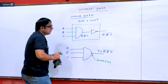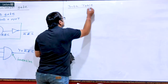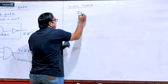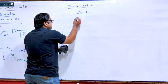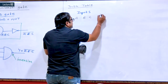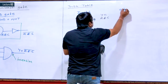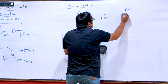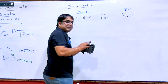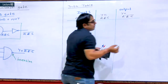Now coming to the truth table. We have two main columns: inputs and outputs. Inputs are A, B and C. I will have an intermediate column Y = A·B·C, and a final output column Y = A·B·C whole complement.